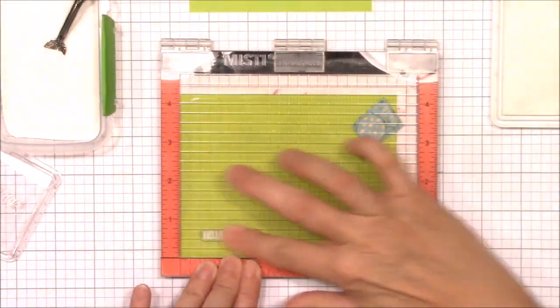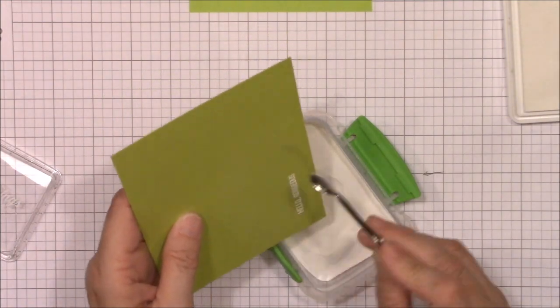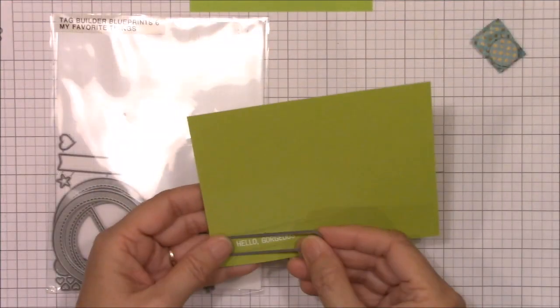Off camera, I heat embossed the sentiment using some white embossing powder and then I die cut it using a tag dye from Tag Builder Blueprint 6.